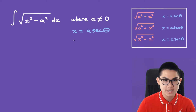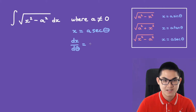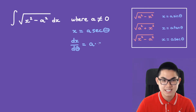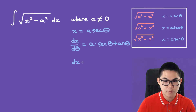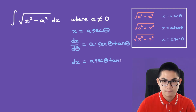What is the derivative? It is going to be a times the derivative of secant, which is secant tan. So dx will be equal to a times secant times tan d theta.